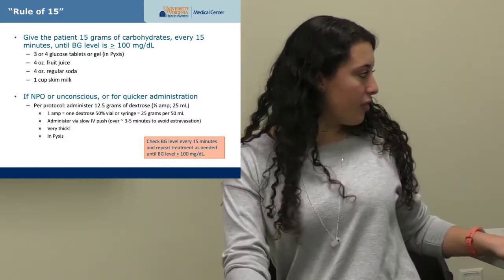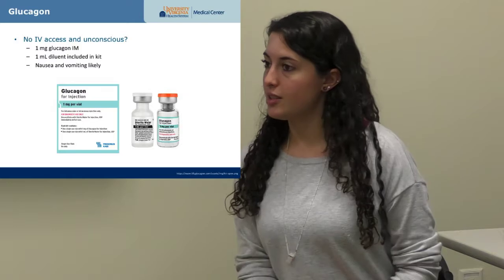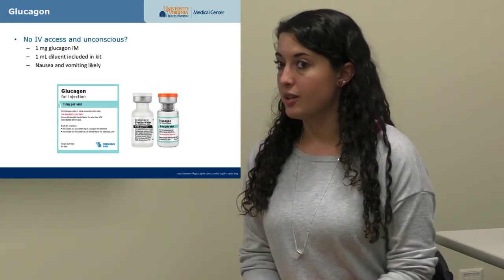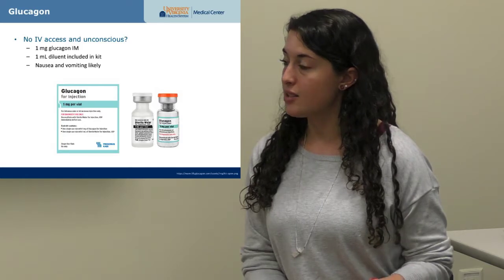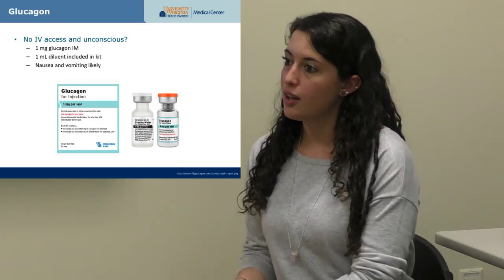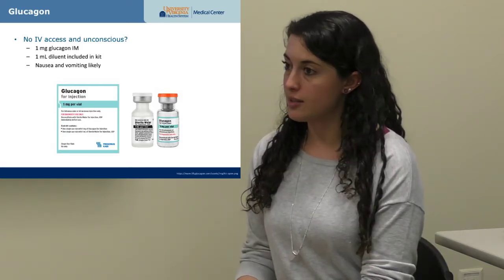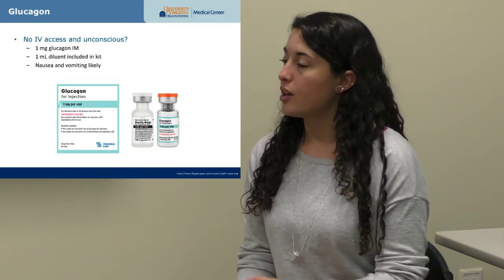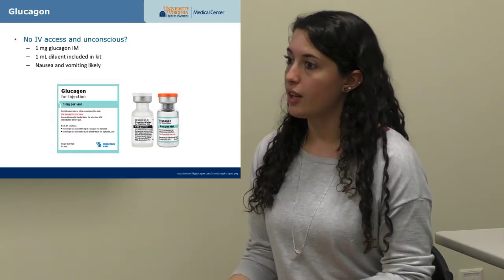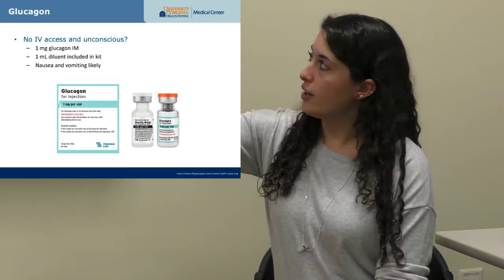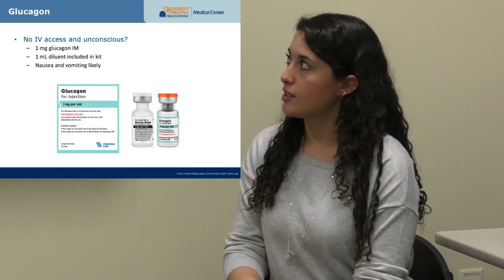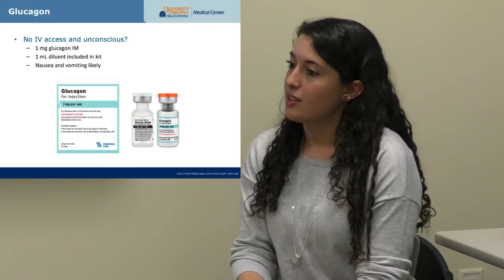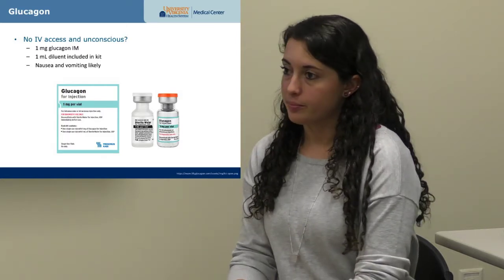If the patient can't take PO and has no IV access, don't delay hypoglycemia treatment trying to obtain access. Use glucagon, which is a kit in the Pyxis. It comes with a one milligram vial and a one mL diluent vial — you remove the water from the diluent, mix it in, and inject intramuscularly. The most likely side effects are nausea and vomiting.